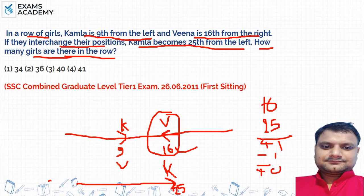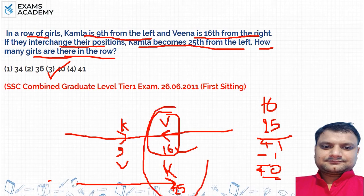The total will be 40. Because the position has changed, from the left side the total position is 25th, then minus 1. So the total number of girls is 40.